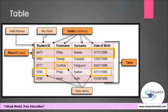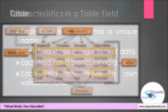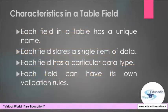The fields are Student ID, First Name, Surname, and Date of Birth. Now we can identify the following characteristics of a table field. First, each field in a table has a unique name. Note however that the same field name can occur in other tables of the same relational database. Next, each field stores a single item of data — for example, a field called Date of Birth would store no more than one date of birth value.